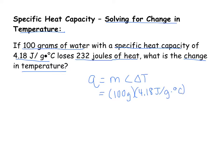Loses 232 joules of heat, so that's going to be 232 joules of heat. What is the change in temperature? So we're going to solve here for delta T.